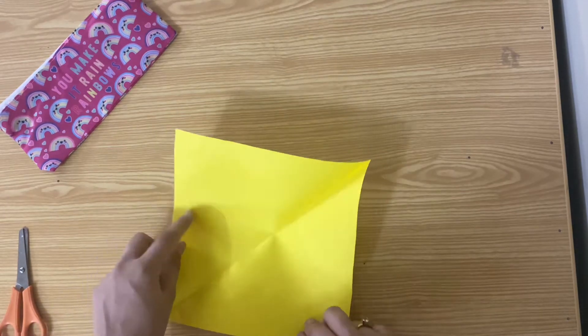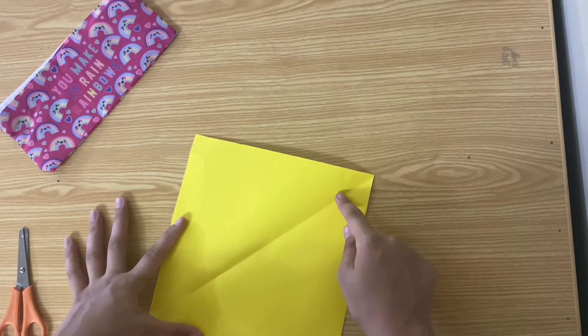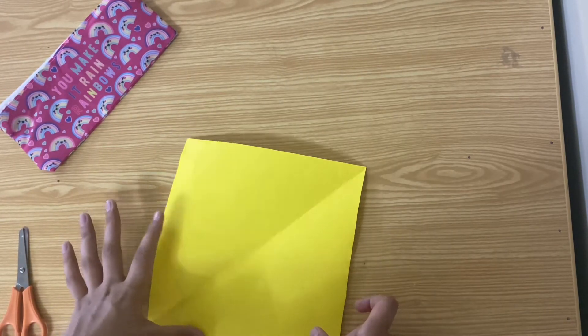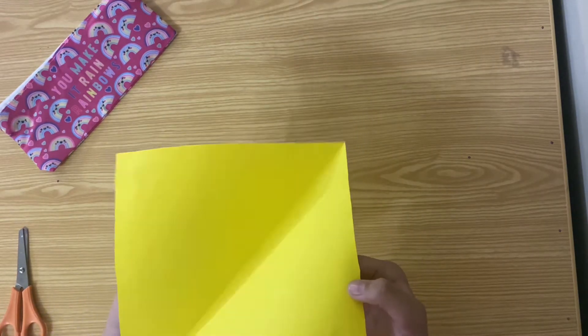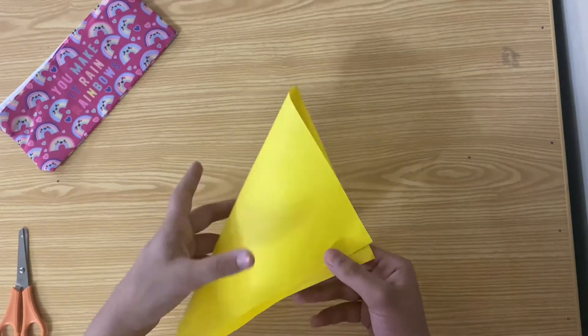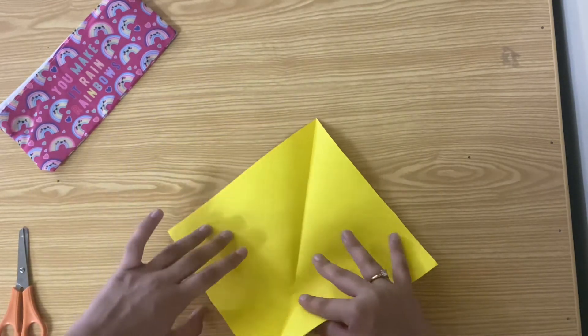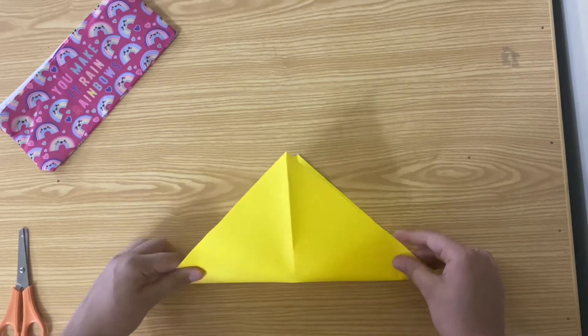We're going to open it up, and I already have a line here. First, you want to make a triangle this way, open it up, and then make another triangle the opposite side.